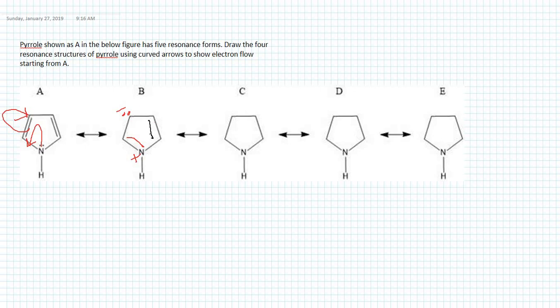Using the same strategy, we introduce a double bond here by using this lone pair, and by using this pi bond we introduce a lone pair here. This has to be a pi bond and this has to be a lone pair. The resulting pi bond should be here, this has to be a lone pair, and the other pi bond we are not changing stays as a pi bond.